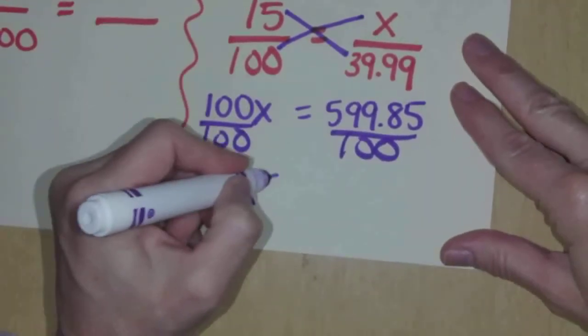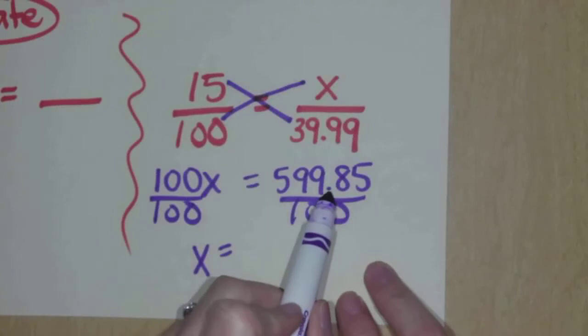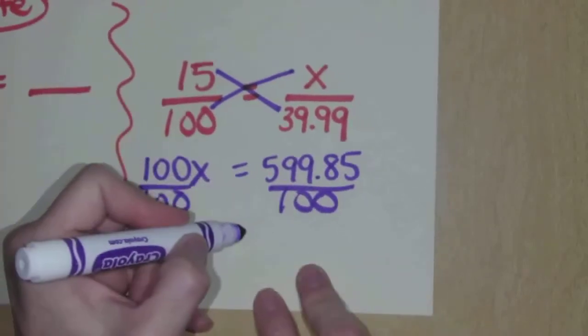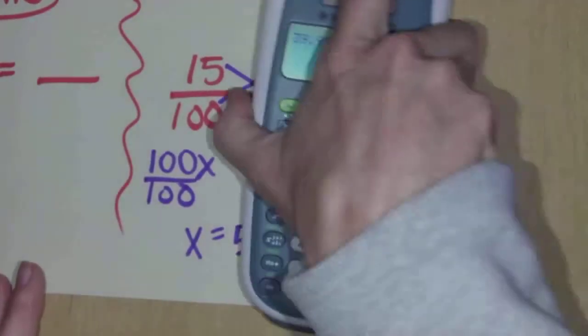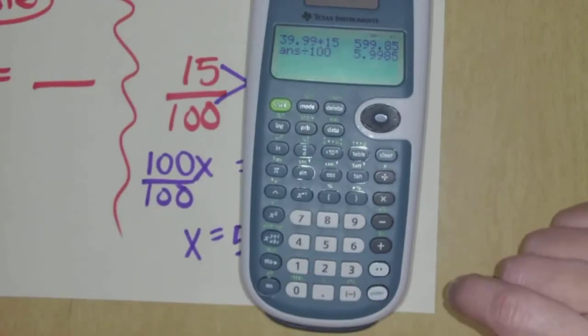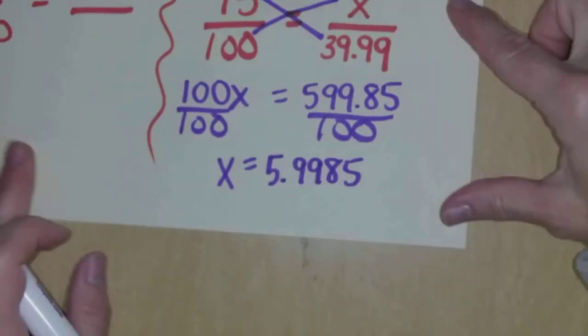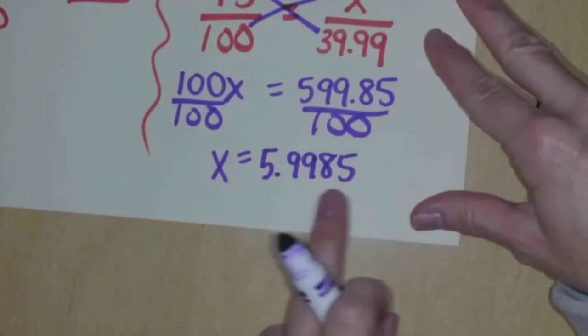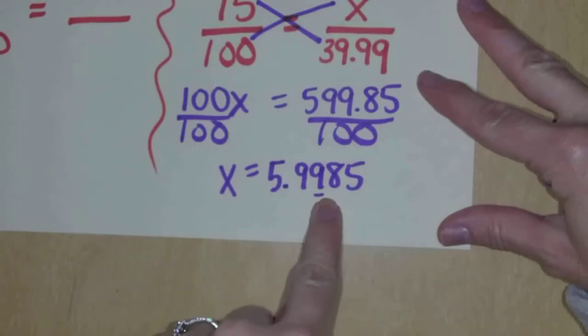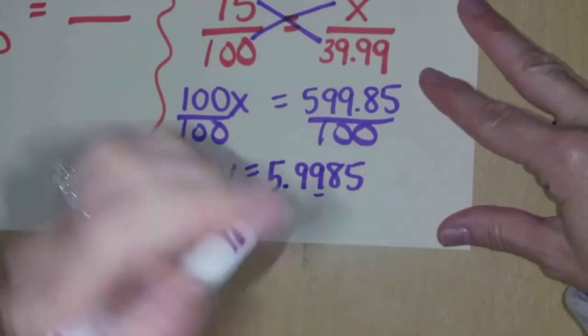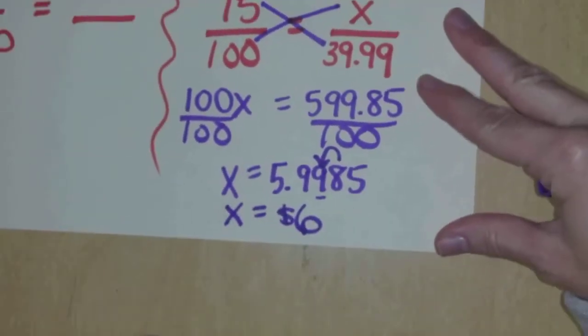Now to solve for X, we divide both sides by 100. And so X equals, well, taking a number divided by 100 means that you take the decimal and you move it to the left two spots. So it's going to be 5.9985. But X represents money. This is not what a cash register is going to do. It's going to do dollars and cents. So we have to round it to hundredths. Being that this is a 9 and this is a 9 and this 8 is going to round him up, I'm going to say that you're going to get $6 off these jeans.